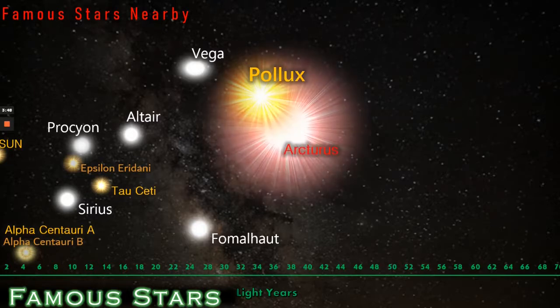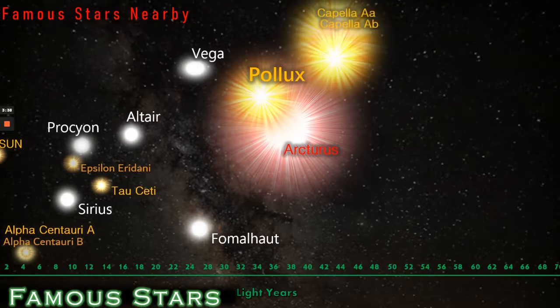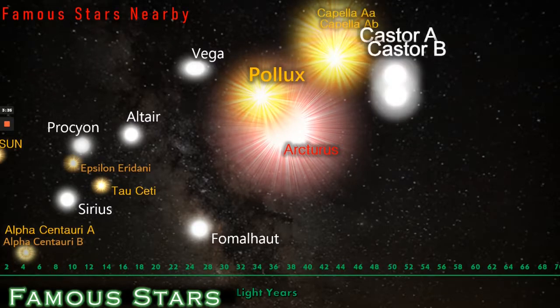After Pollux the next is the red giant star of Arcturus and then the multiplicity star system Capella AA and AB. And finally Castor AA and BA.